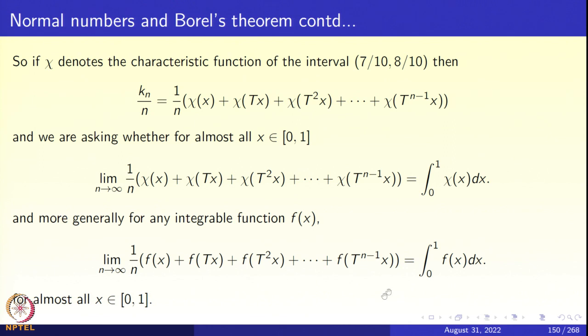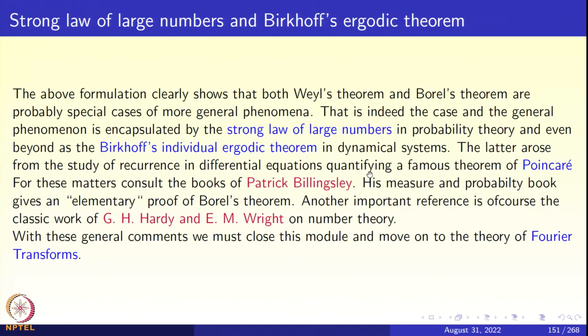And the average that you see on the right hand side should be thought of as space averages. This equality is an equality between time averages and space averages. And for what transformations does this happen? Those transformations are called ergodic transformations. And that is exactly the way in which ergodicity was studied as a phenomenon in statistical mechanics, whether time averages and space averages are equal or not.